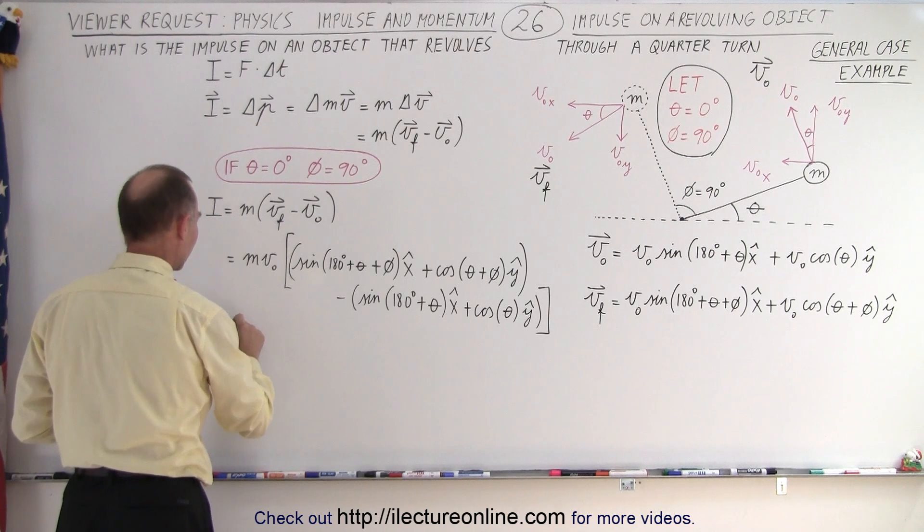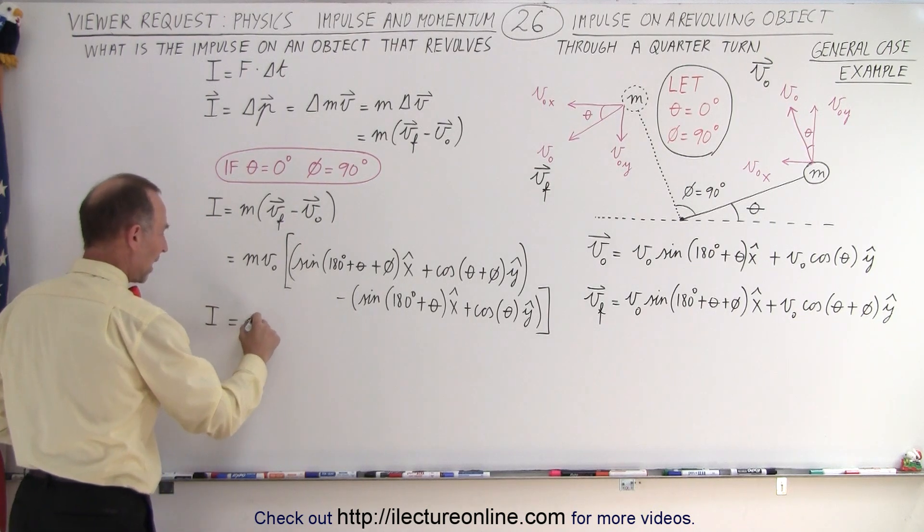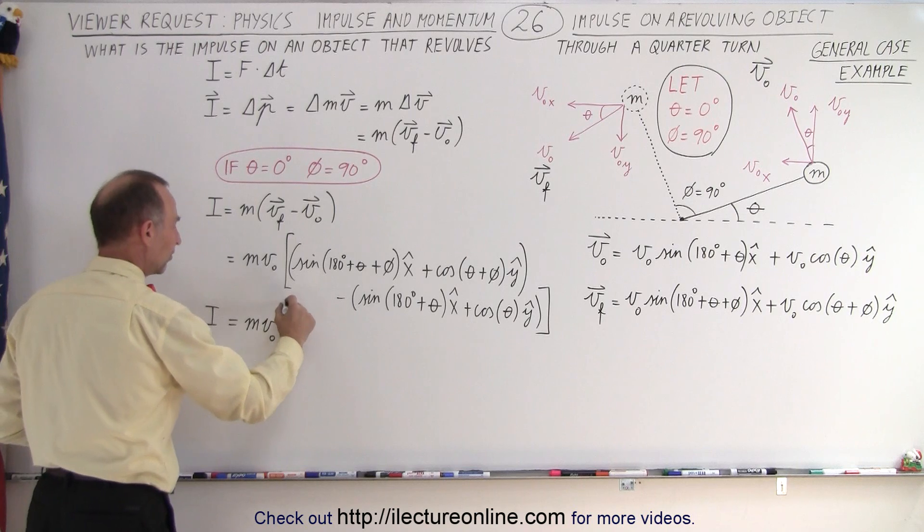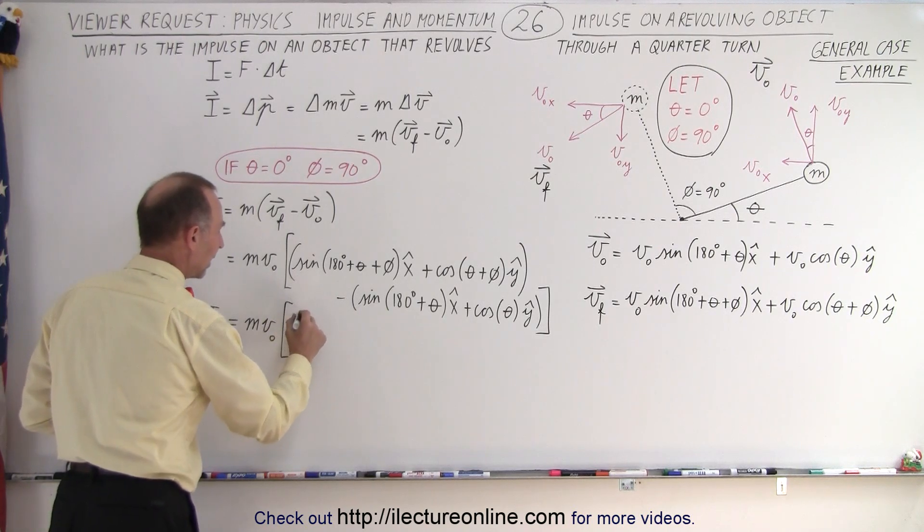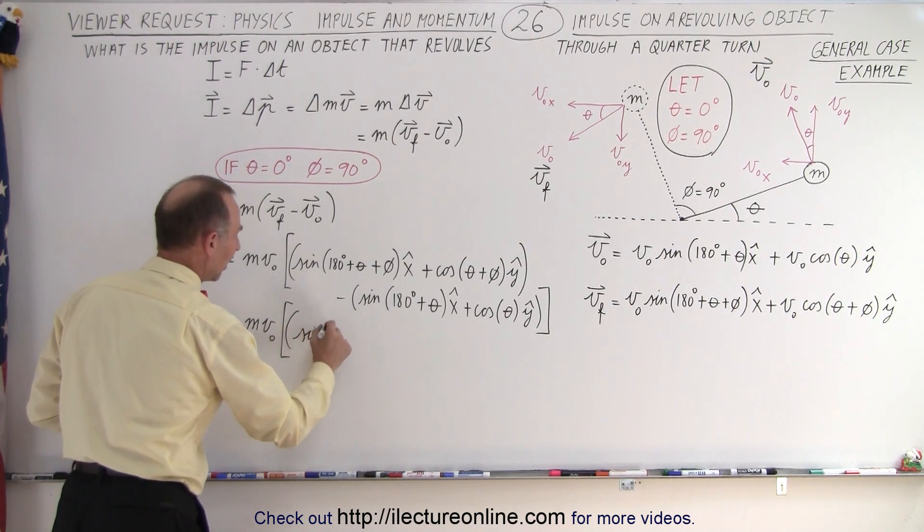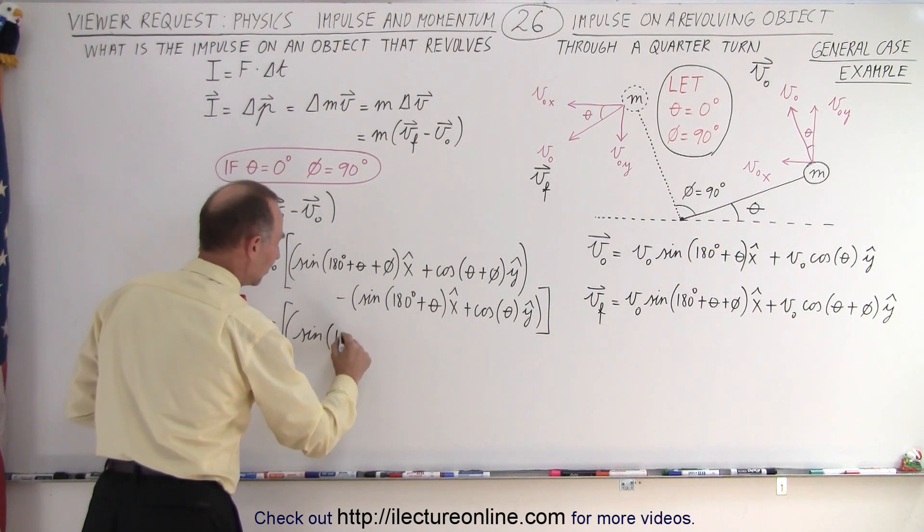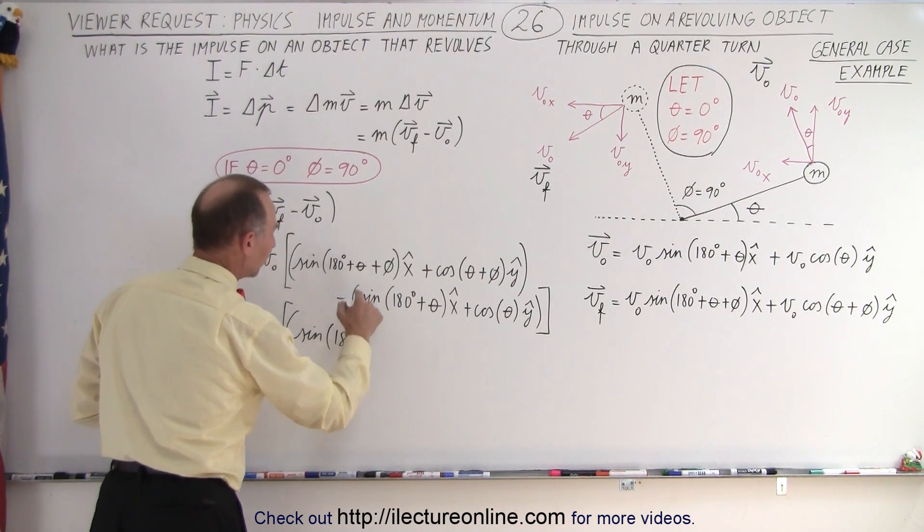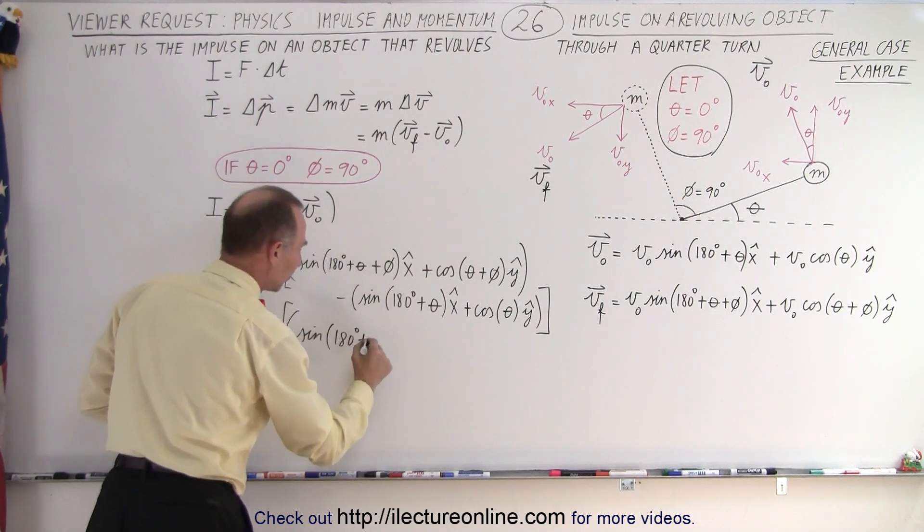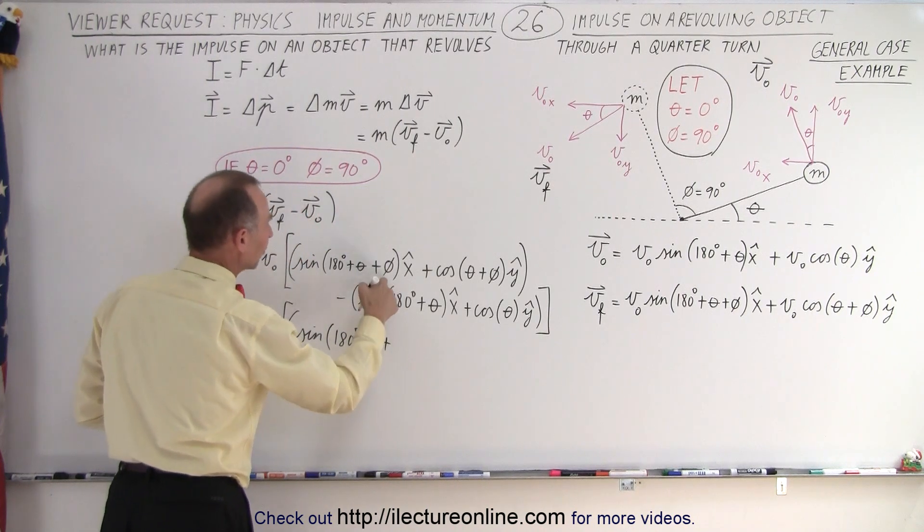So that means that the impulse is equal to the mass times the initial velocity, the magnitude, times the sine of 180 degrees plus theta. Now theta is going to be 0, that's our starting angle, plus phi,